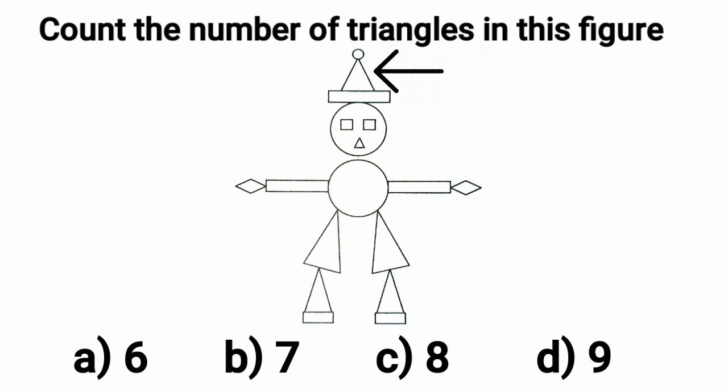Here is the first triangle. Triangle number 1. Then 2, 3, 4, 5 and 6. No more triangle is there. There are 6 triangles in this figure. Option A, 6 is the correct option and we will put a tick mark here.